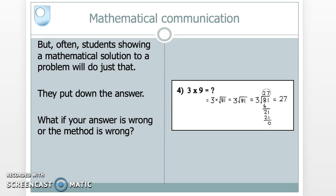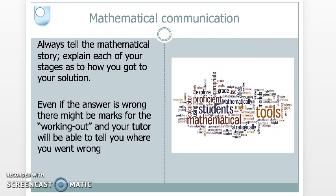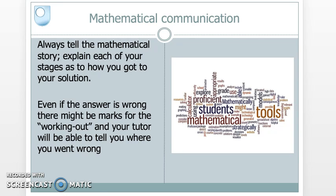Often students put down answers without showing any mathematical background to it at all, and they don't justify their answers. By just putting down an answer, if it's right or wrong, basically you'll get very few marks. Getting the answer is not the way forward. What we like to see is the method that you use to get that answer. So right or wrong, it's always important to tell the mathematical story. Even if your answer is wrong, there might be some marks for the working out, or at least your tutor will be able to tell you where you went wrong.